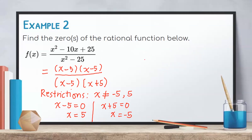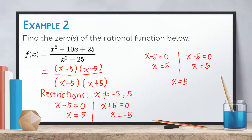Now determine the values of x that will make the numerator equal to zero. We equate the factors of the numerator to zero: x - 5 = 0 and x - 5 = 0, both giving us x = 5. Notice that x = 5 as the zero of the numerator is also a restriction of the denominator, so we cannot consider x = 5 as a zero. Therefore, the rational function has no zero.